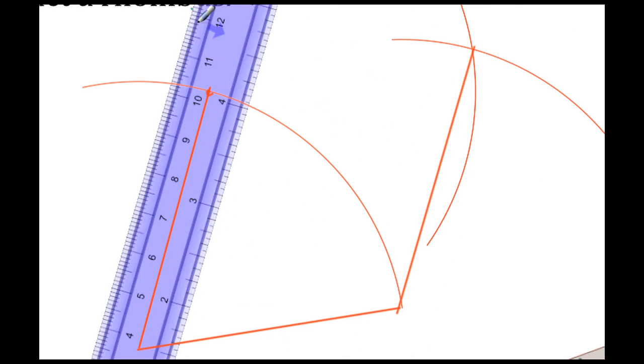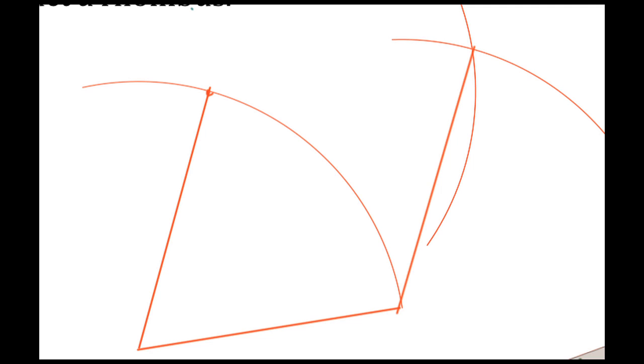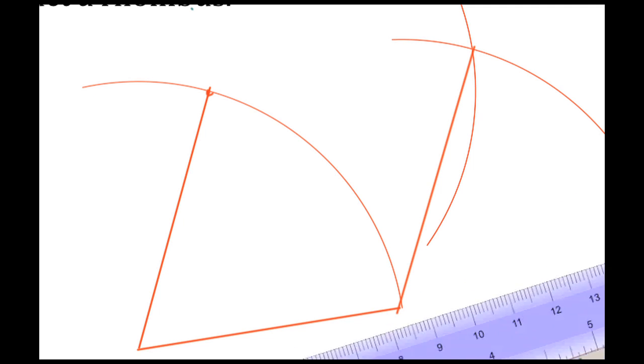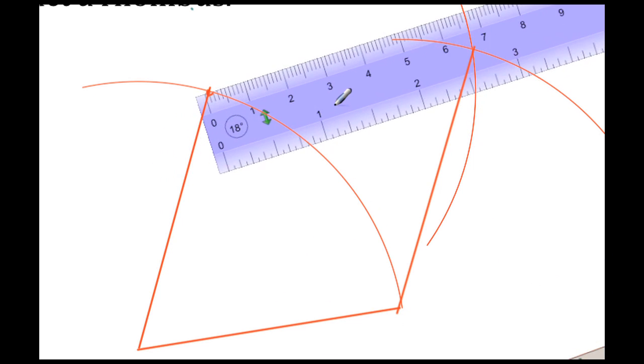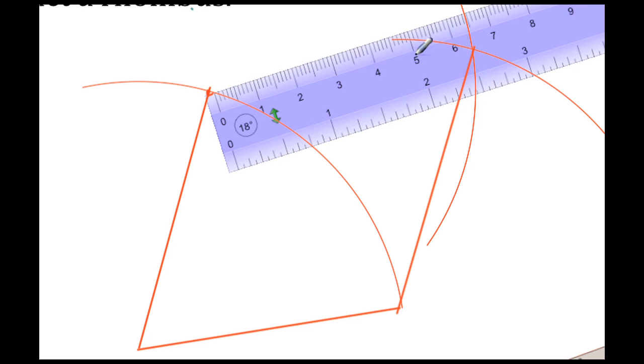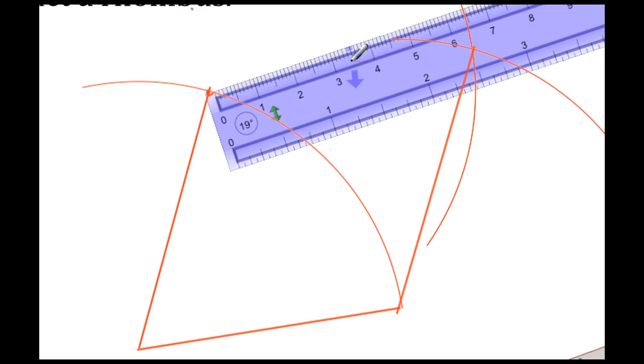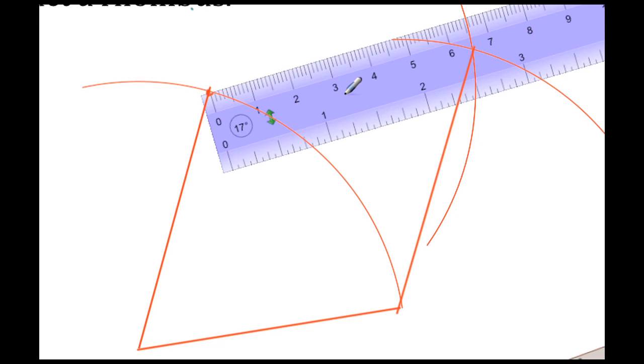Let's pick up this ruler and reorient it. So now, this point here, I need a line that goes through the intersection that I have to the right.